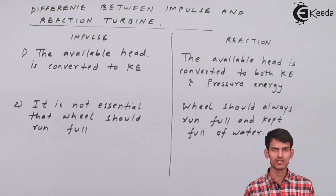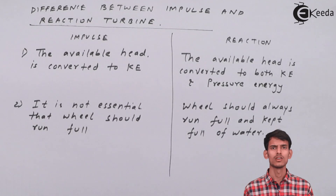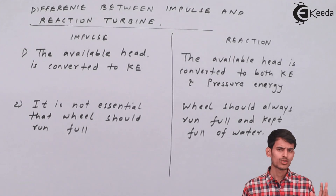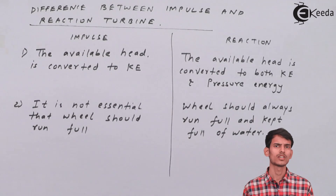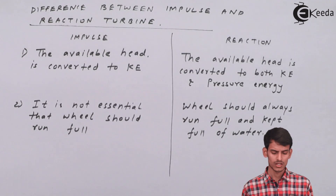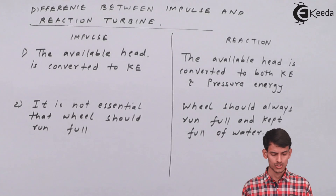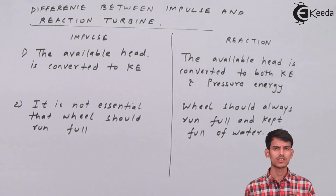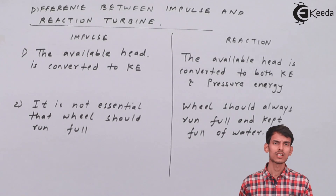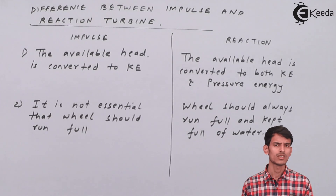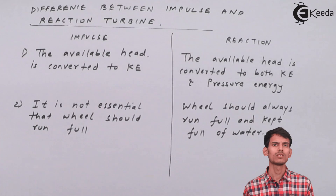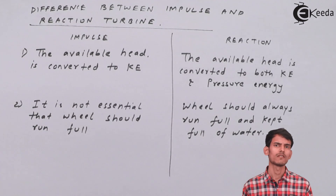In a reaction turbine, it is completely closed and sealed — there should be no leakage of air inside. The turbine should always be running full with no empty spaces, because if there are lacunas or empty spaces, air may enter the turbine, leading to loss in efficiency. So in impulse turbine it is not necessary to run full, but in reaction turbine the turbine must always be full of water with no gaps.